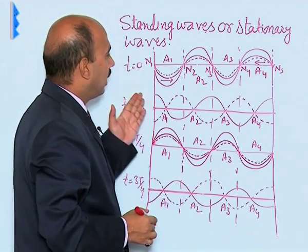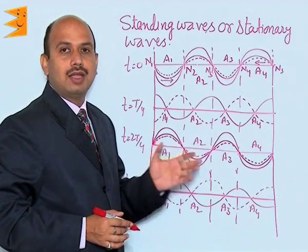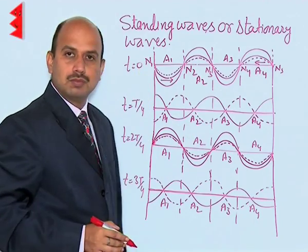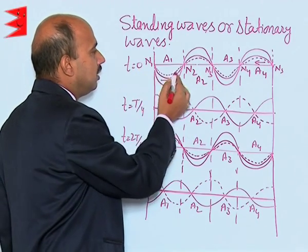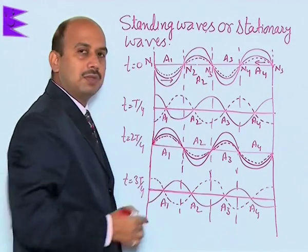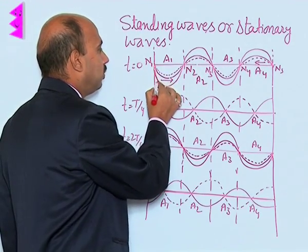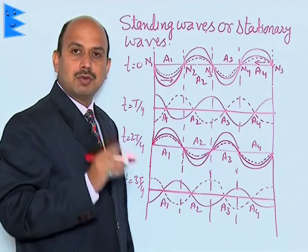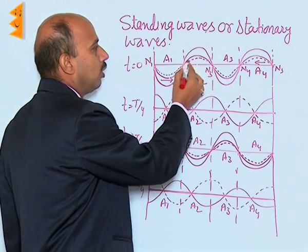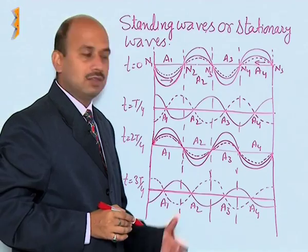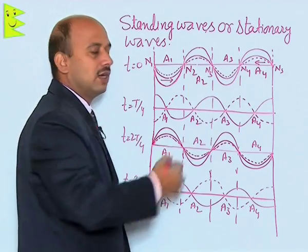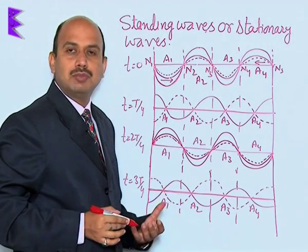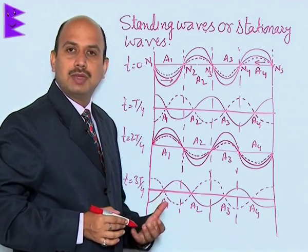There are two waves — one traveling from left to right and another traveling from right to left — they superimpose on each other. At t = 0, the crest of one wave falls on the crest of the other, so the amplitude is maximum. These are the positions of the antinodes where the resultant wave has maximum amplitude: the first, second, third, and fourth antinodes. The points where displacement is 0 — N1, N2, N3, N4, and N5 — represent the nodes.